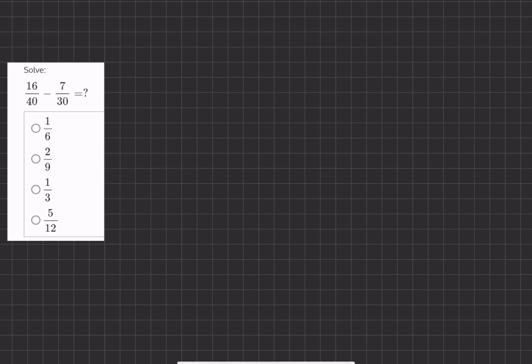In this problem we're asked to subtract two fractions from one another. 16 over 40 and 7 over 30 don't have the same common denominator.